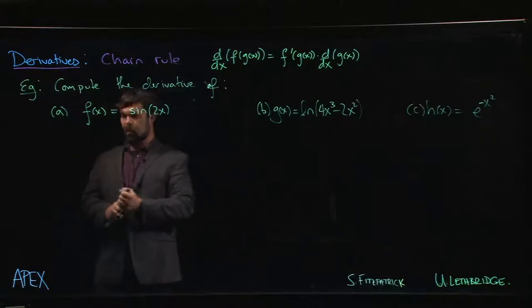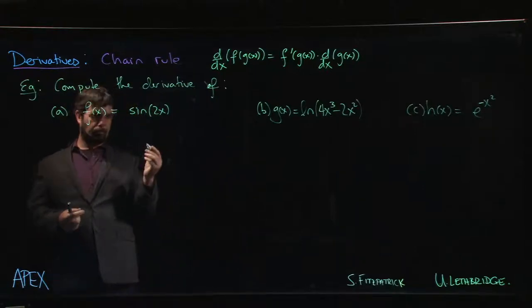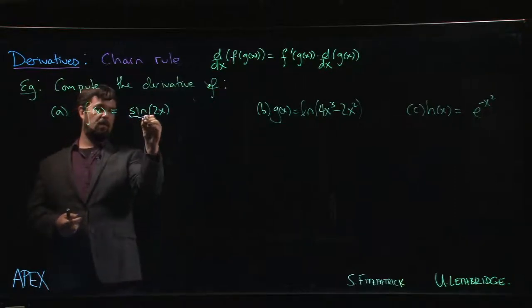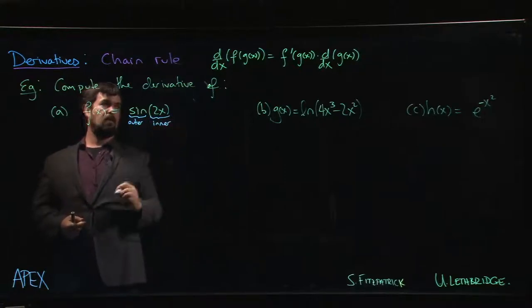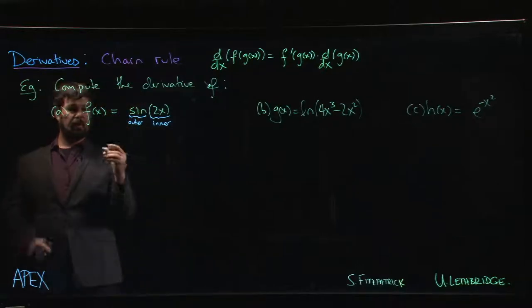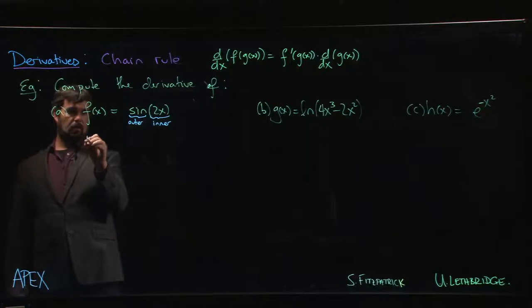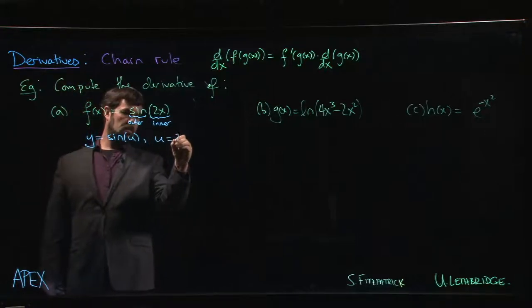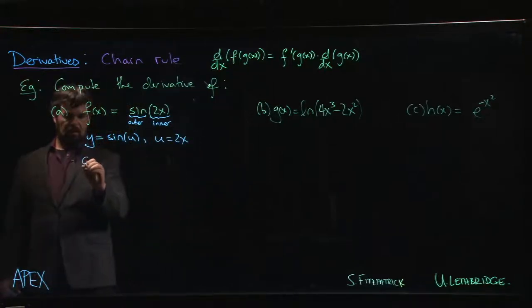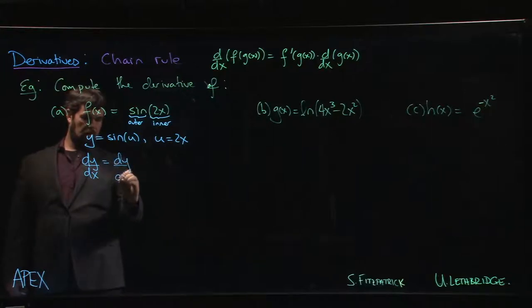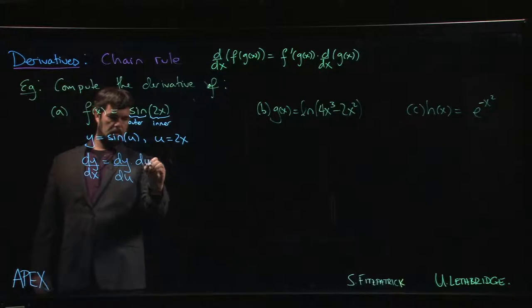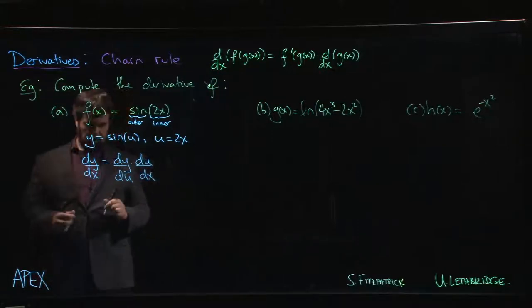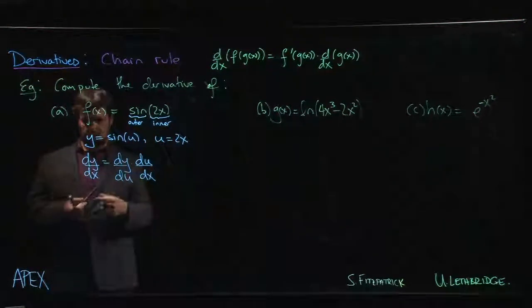So how do we use the chain rule in each of these cases? Well, in this case, we identify this is sort of our outer function, the 2x is the inner function. So we might want to do this, if you like, you can also use that Leibniz notation. You could say that y is equal to sine of u, where u is equal to 2x, and the chain rule in Leibniz notation says dy dx is going to be dy du times du dx. And now, dy du, du dx, we can read those off from here.